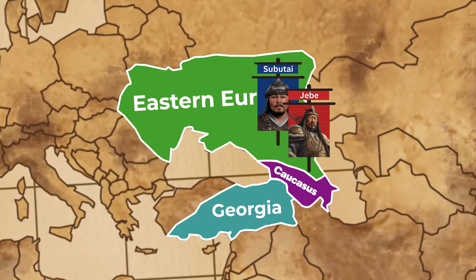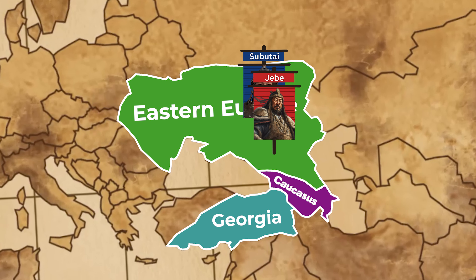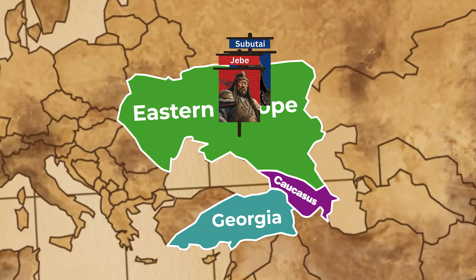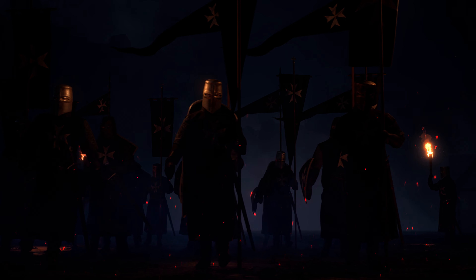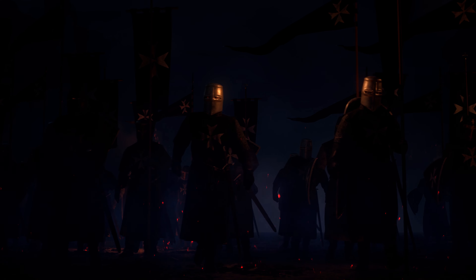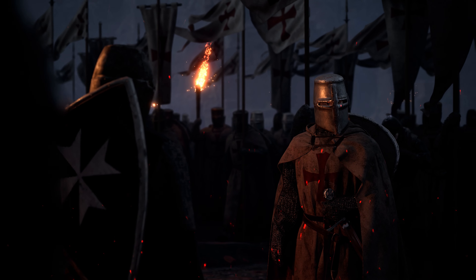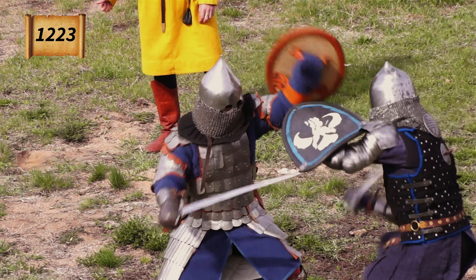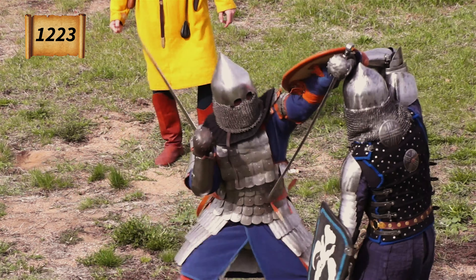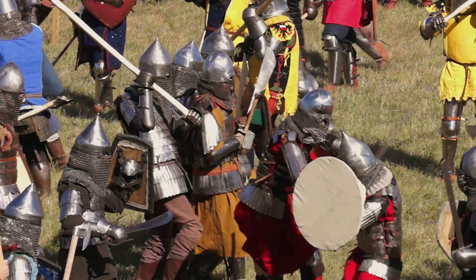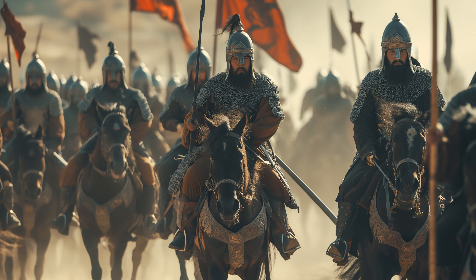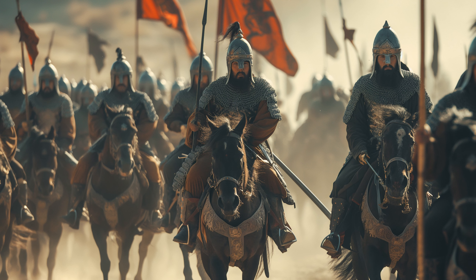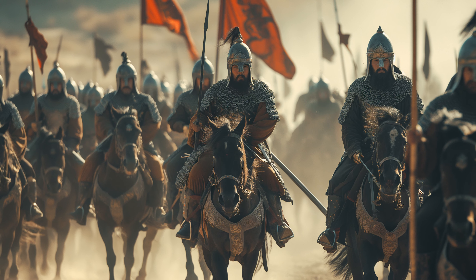After subduing the tribes of the Caucasus, the Mongol generals pushed further west into Eastern Europe. Their path led them to the Kivan Rus, a federation of Slavic tribes under the rule of various princes. The most significant clash during this campaign was the Battle of the Khalkha River in May 1223, where the Mongol force — still led by Subutai and Jebe — faced a coalition of Rus princes and Cuman allies. The coalition army was significantly larger, but it lacked the cohesion and tactical sophistication of the Mongol forces.